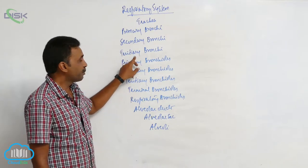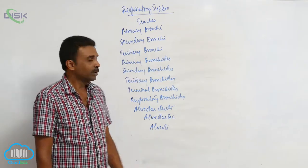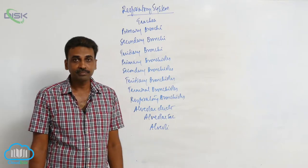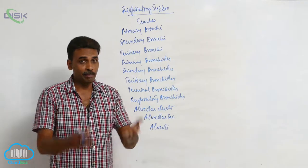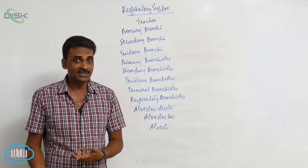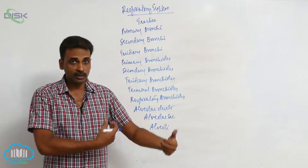Each secondary bronchus will further divide into tertiary bronchi. Tertiary bronchi are also called segmental bronchi based on the number of bronchopulmonary segments, 10 on the right side, 8 on the left side.